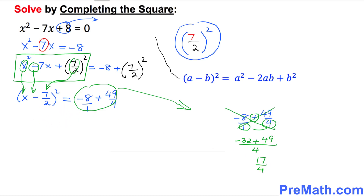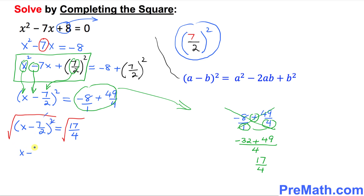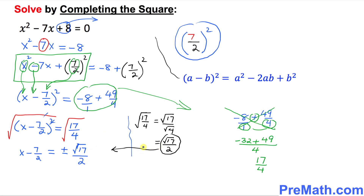So (x − 7/2)² equals 17/4. The next step is to take the square root of both sides to undo the square. Once you take the square root, they cancel out, giving x minus 7/2 equals plus or minus the square root of 17, divided by 2 — using the rule that √(17/4) = √17/√4 = √17/2.